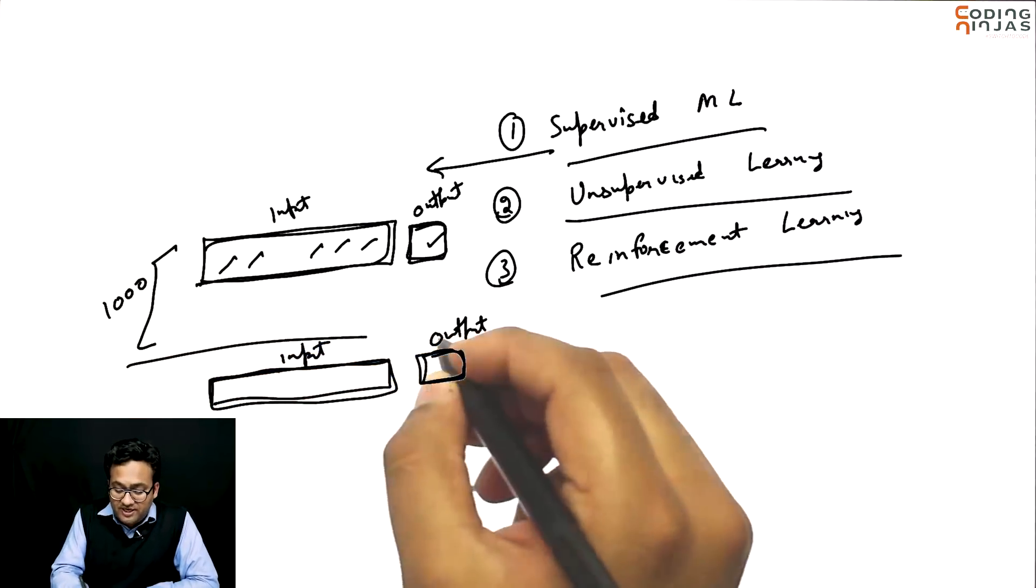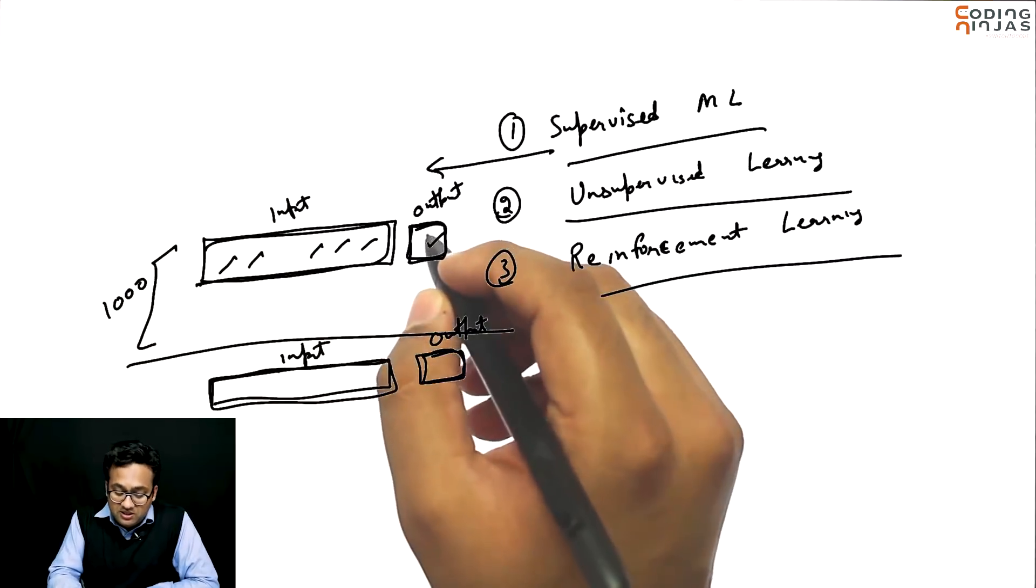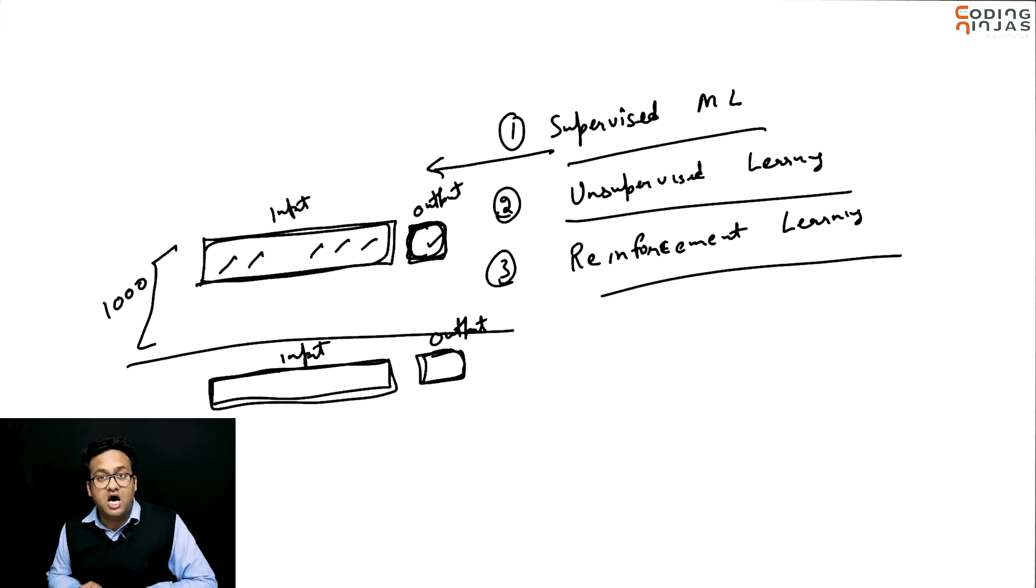When the input data, the past experiences that are given to you, they are clearly marked with the output that you are looking for. Another example could be tumors. Let's say that we are given a lot of data on tumors and we are supposed to predict whether a tumor is malignant or not. We are supposed to predict whether it is malignant or benign.